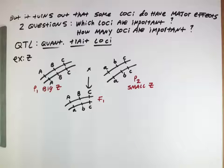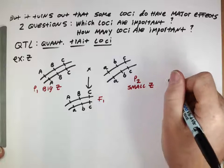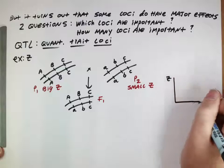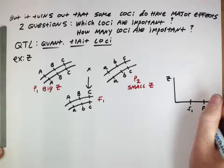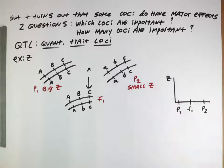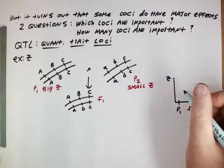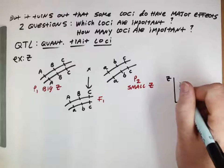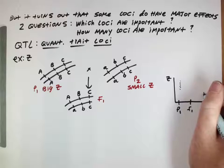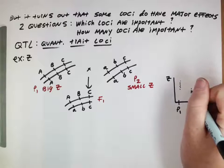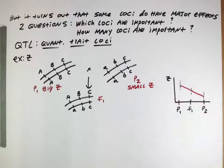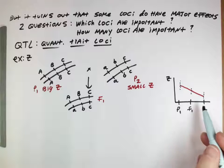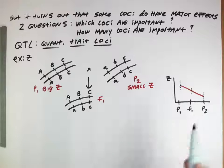We would expect the F1 to have an intermediate value of the trait. If we plot the value of the trait for F1, P2, P1 - the P1 individuals are large, so they'll have large values of Z. We would expect these F1 individuals to be kind of intermediate. So we can actually draw some sort of relationship like this. The more like P2 they are, the smaller the trait.